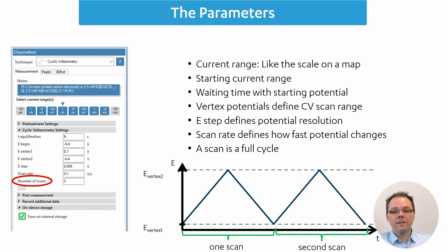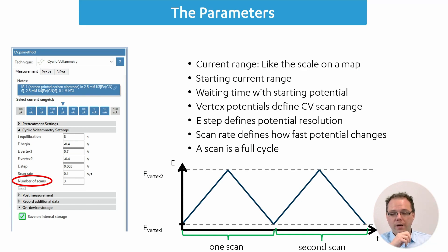The last basic parameter is the number of scans. Going from E-begin to vertex one, vertex two, and back to E-begin is a complete scan, and you can repeat this multiple times. This is interesting for testing how stable your system is, or for people who modify a system with cyclic voltammetry — for example, depositing a polymer to watch it evolve over multiple cycles.